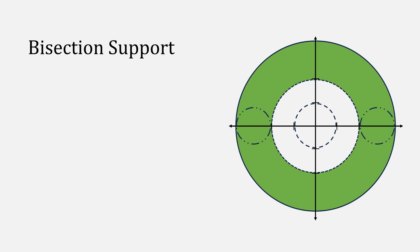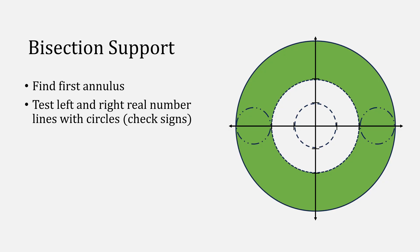The algorithm can also help bisection. First, find an annulus that contains your root, then check the left and right number lines with circles. Keep whichever one passes the interval. Note, though, that this might be passing because of a complex root, so it's best to use if you know that all the roots are real.